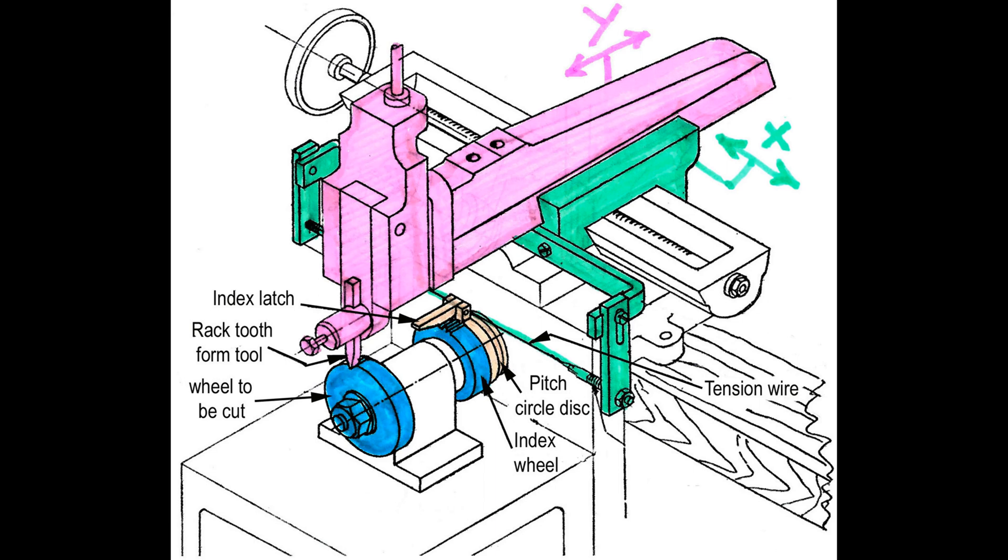It's necessary to machine a cylinder to wrap the wire on for each gear to be cut. Many machinists have used this principle. Some links for YouTube videos are given in the description.